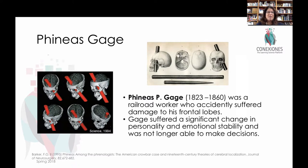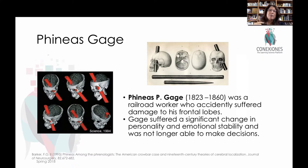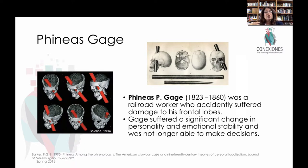Phineas Gage was a railroad worker who had a tapping rod that accidentally hit dynamite, and the rod shot up through his cheek and out through the top of his head. What was fascinating is, number one, the guy lived — pretty amazing. But before the accident he was this really affable, nice guy who got on well with a lot of people. After he lost this particular network in the brain, he did not have the same perception of emotional states — no emotions, no opinions, no feelings about anything he experienced. This leads to the fascinating hypothesis that your inability to have emotions changes your ability to make decisions, and therefore you are not able to learn other things as well.